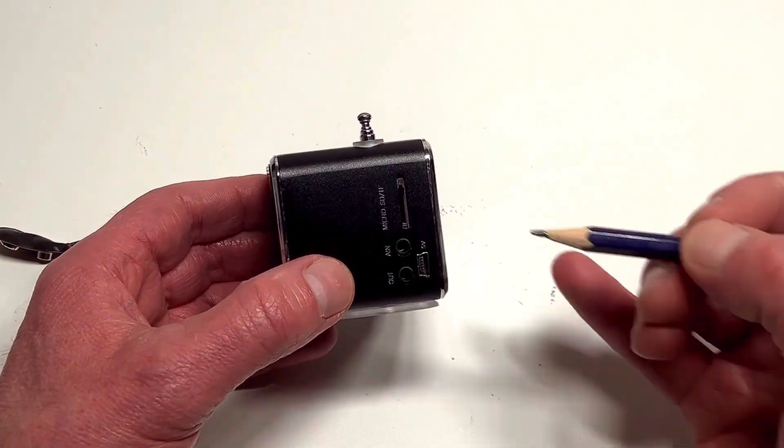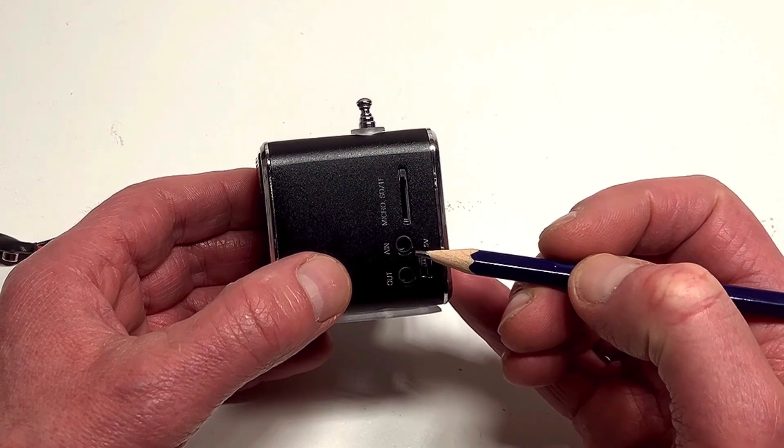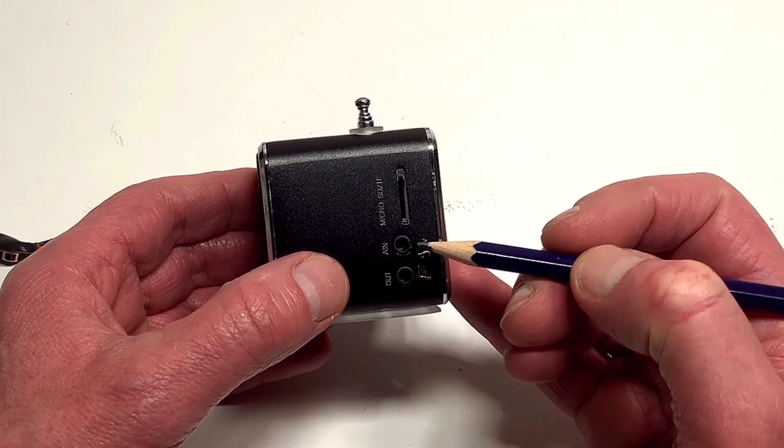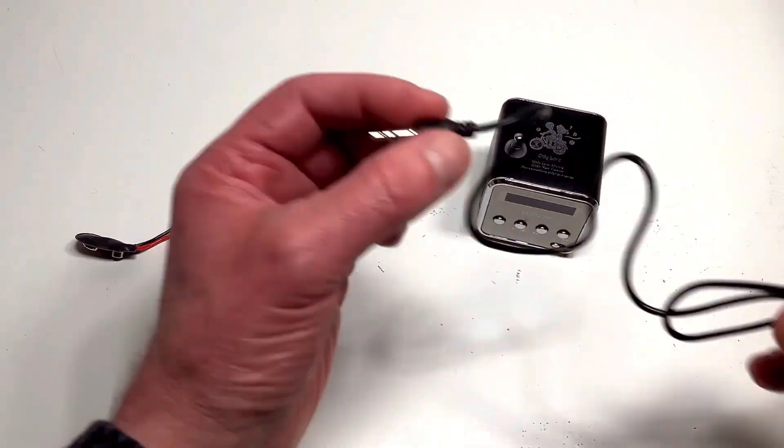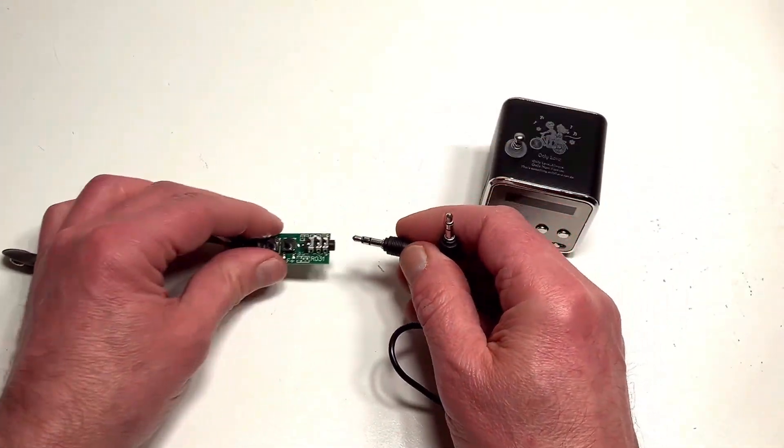If I turn it to the side, you'll also see we've got an auxiliary in. So we can also utilize this as a little amplifier. If you're interested in this, I have made a little video on it. Now to connect these two together, we simply need a male to male connector lead. So let's do that now.